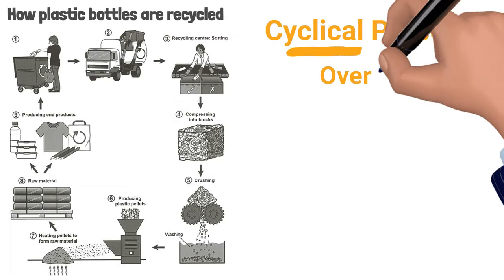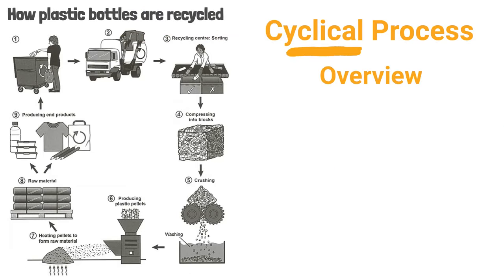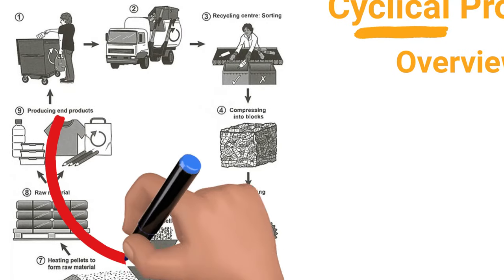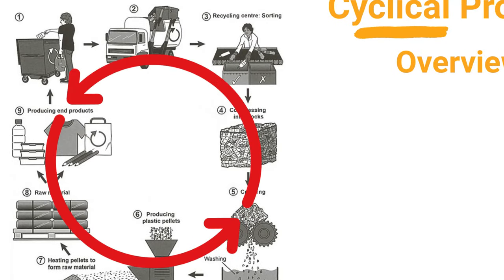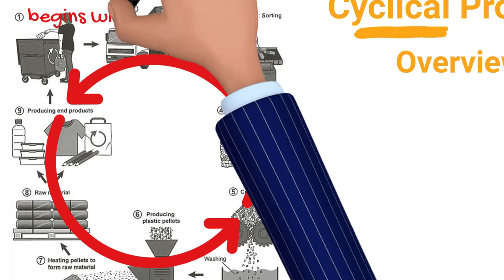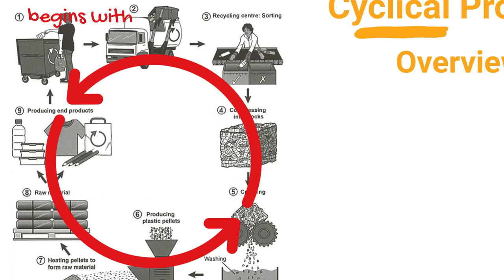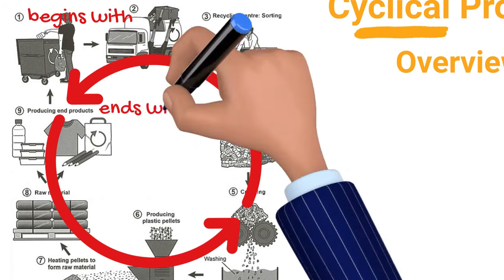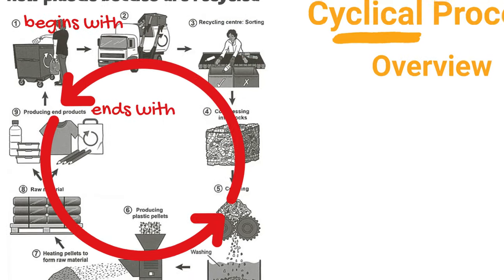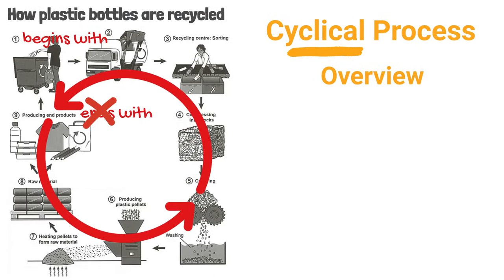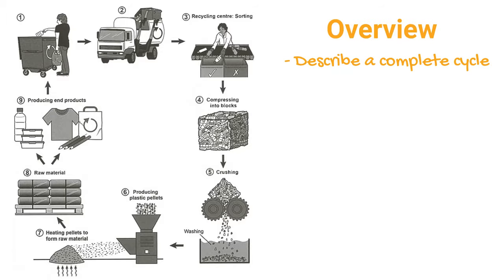First of all, let's talk about the overview paragraph. Since this is a cyclical process, it never ends. So don't make the mistake of saying that the process begins with collecting used bottles and ends with producing new plastic products. As I said, it never ends. Instead, we should describe a complete cycle. Let's see what steps are in this cycle.